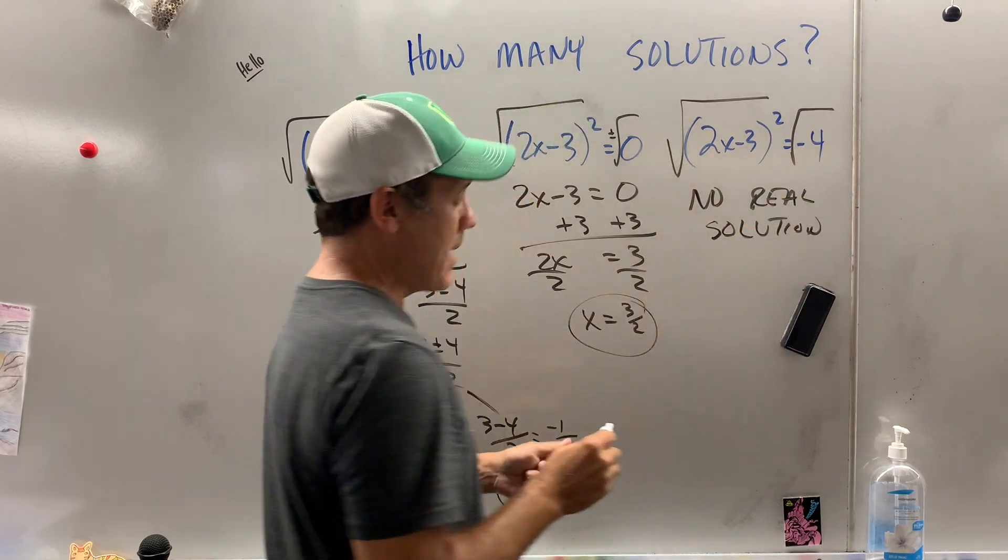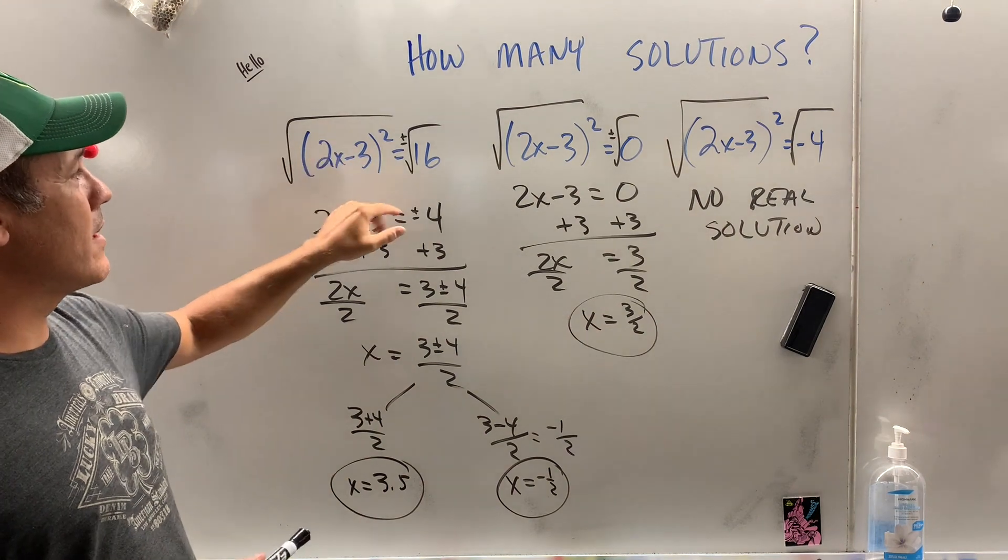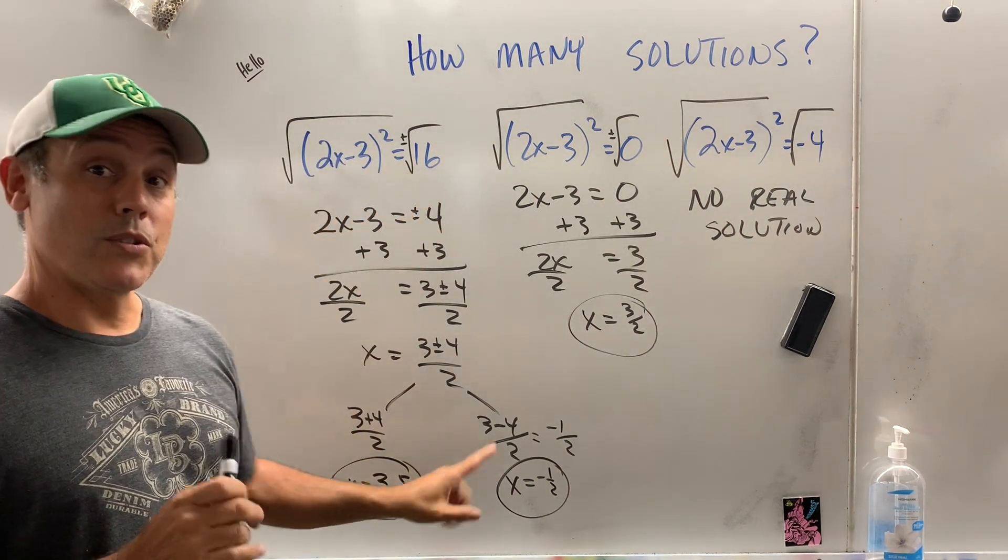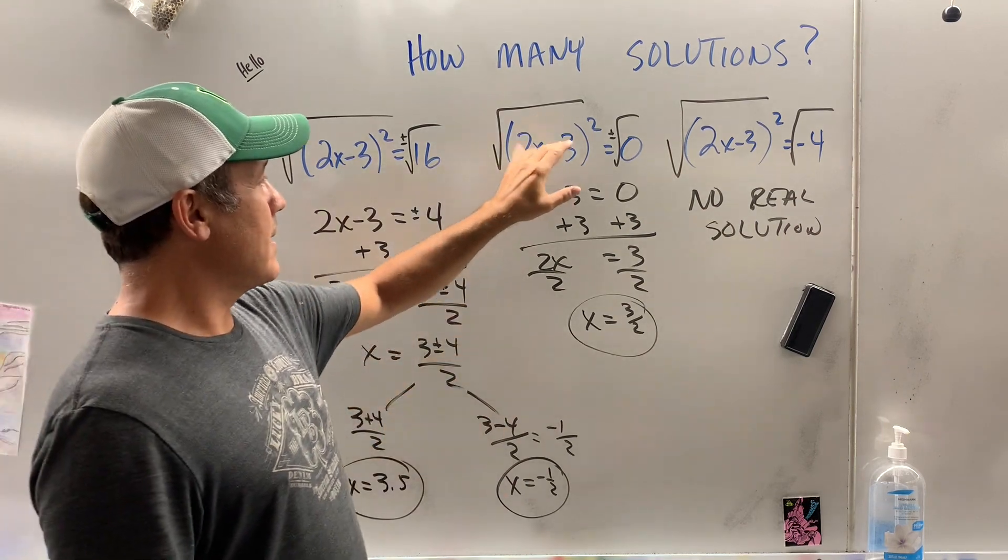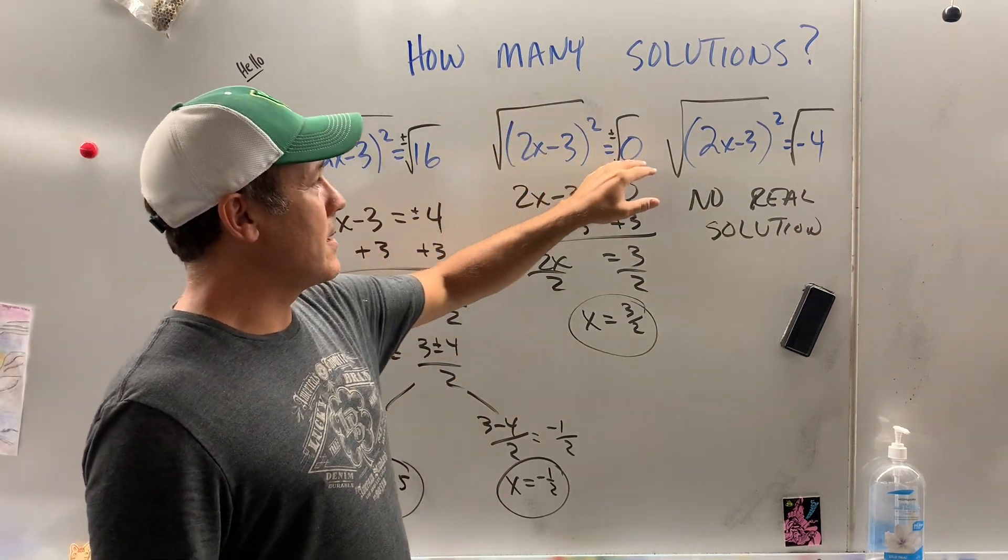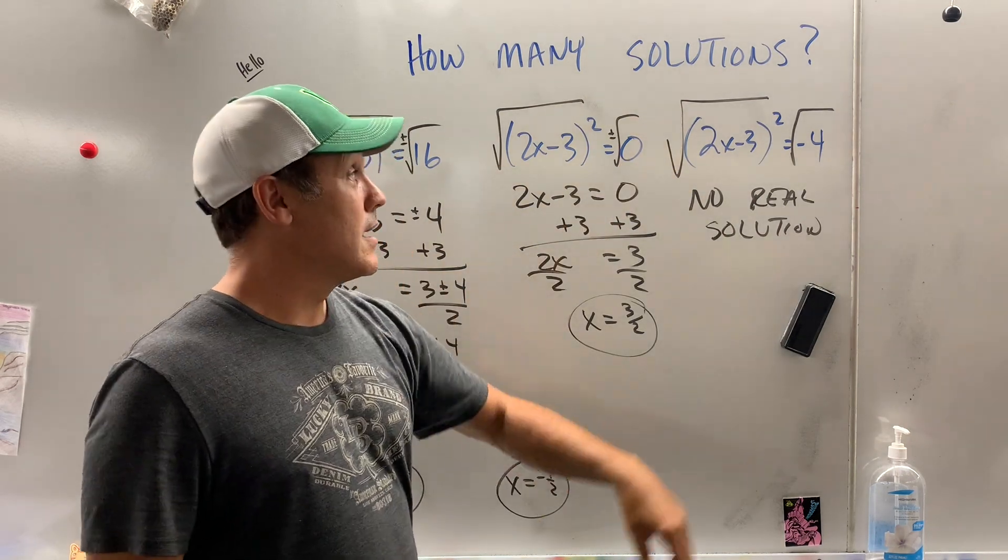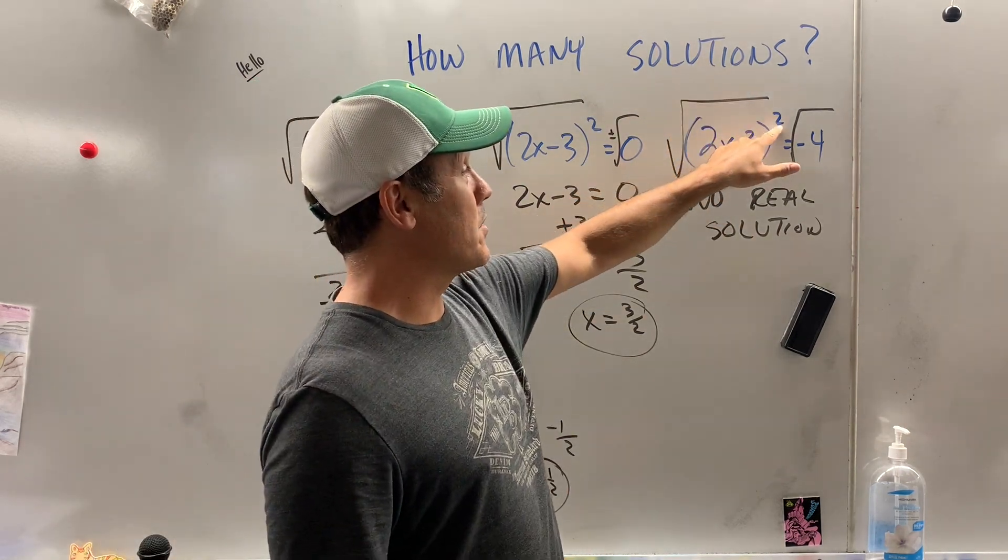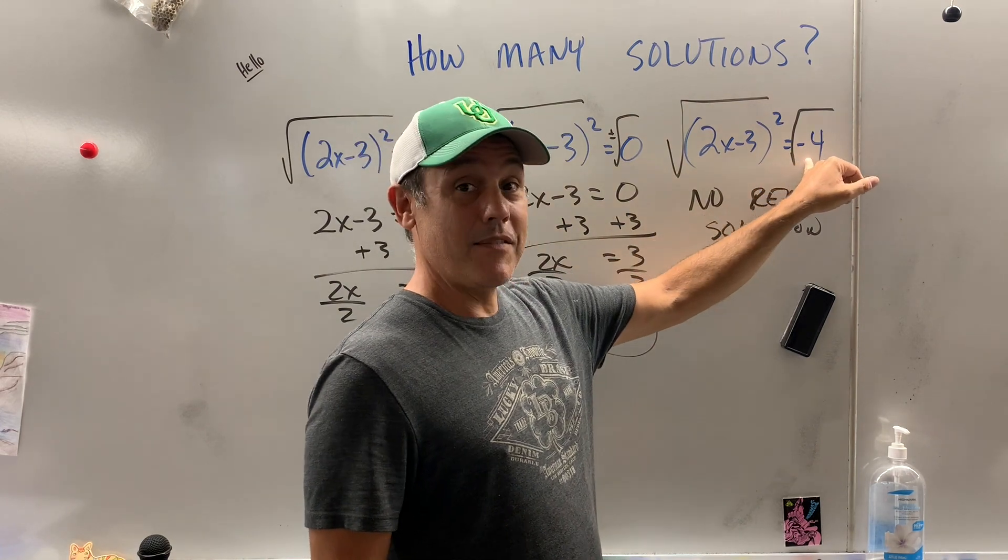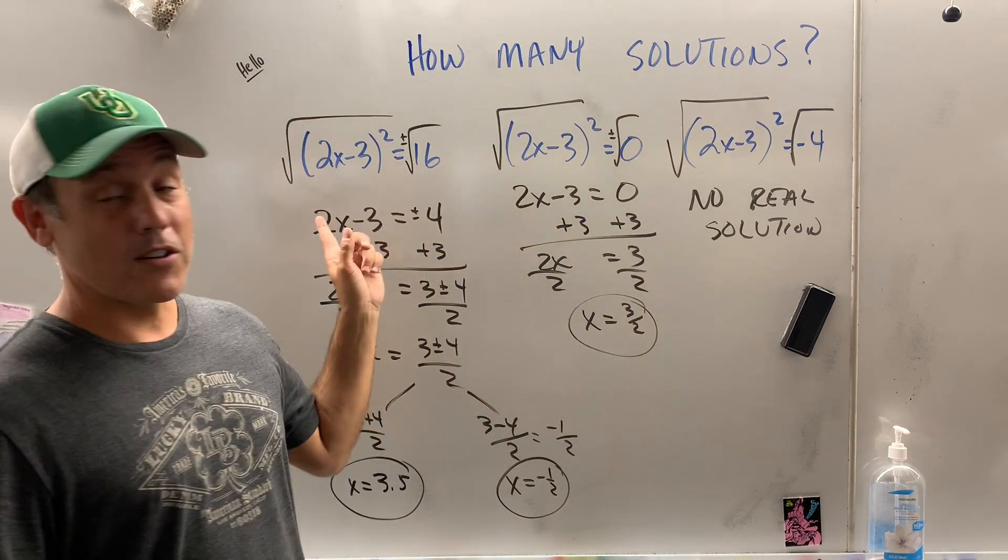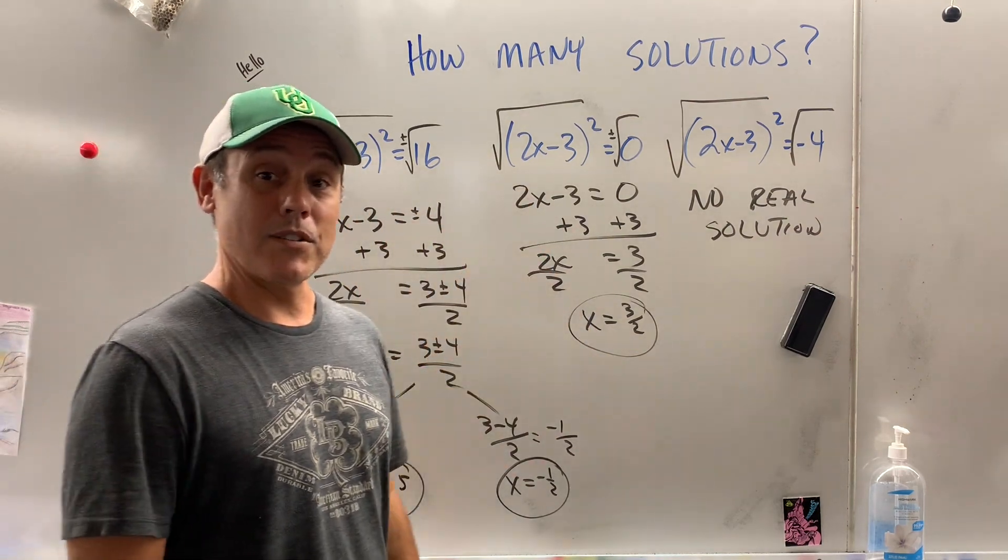So let's go back. When you have something over here equal to a number bigger than zero, you're going to get two solutions. When you get something over here with a squared and a zero over here, you're going to have one solution. And when you have something over here with a squared and you have a negative number on the right side, no real solutions. That, my friends, is how you can determine how many solutions an equation has.